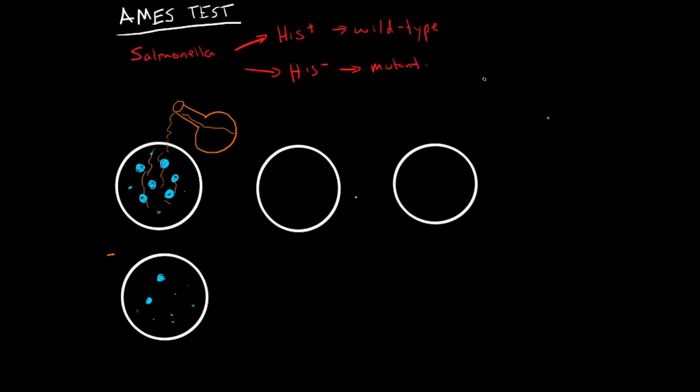So if we draw a bunch of rat cells right here from the liver, he would homogenize it so it's just a bunch of enzymes like this.